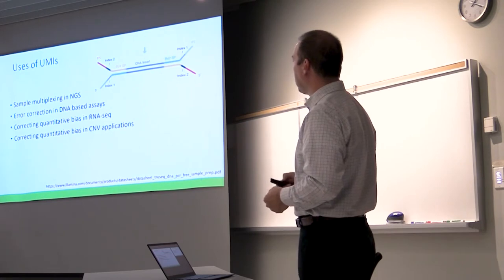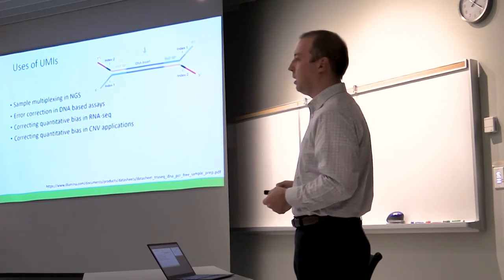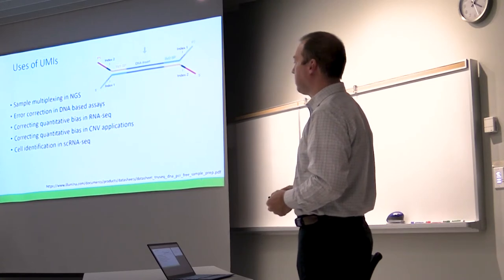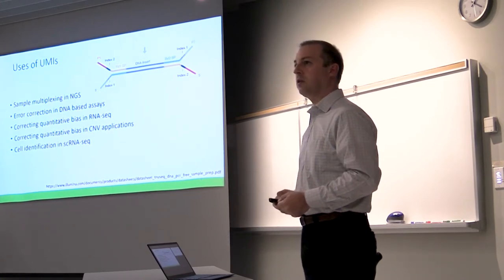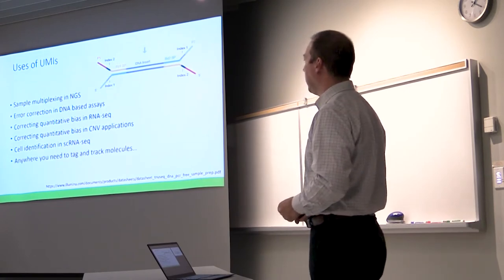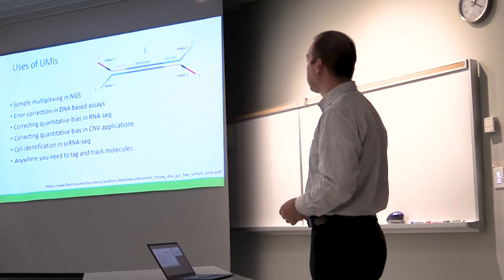And other applications: I'm not going to go into it, but you can do the same kind of correction in copy number tests. You can use molecular identifiers for cell identification in single cell RNA sequencing assays, which I know has been presented here before. And anything really where you need to tag and track molecules through the assay.